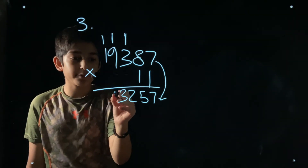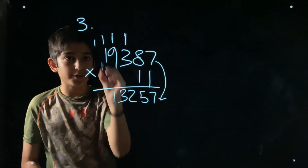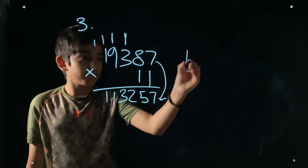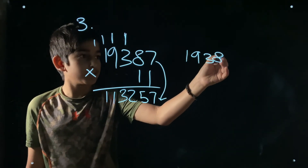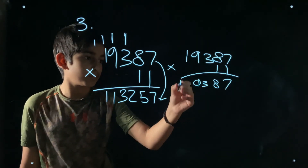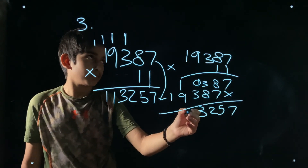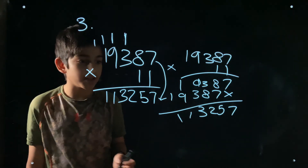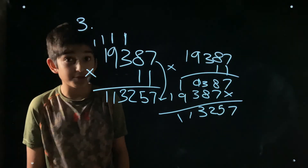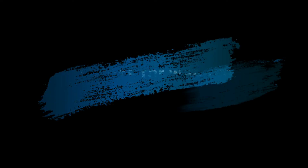Continuing: 3 plus 8 is 11, plus carry 1 is 12 — write 2, carry 1. Then 9 plus 3 is 12, plus carry 1 is 13 — write 3, carry 1. Then 1 plus 9 is 10, plus carry 1 is 11 — write 1, carry 1. Finally 1 plus 0 is 1. The answer is 113257. We verify this by calculating 19387 times 11 and confirm it's the same number.